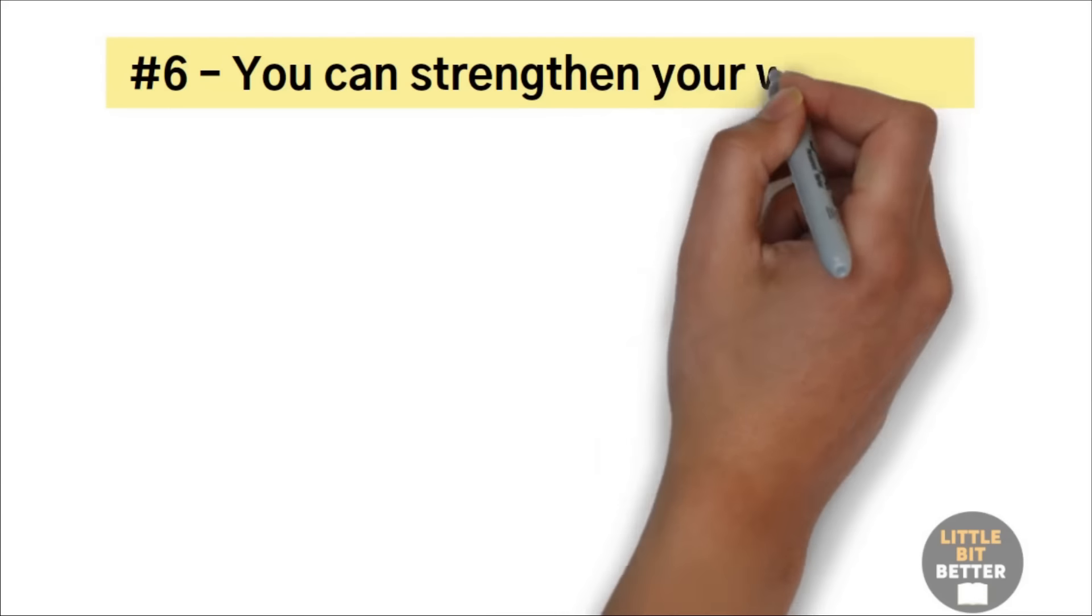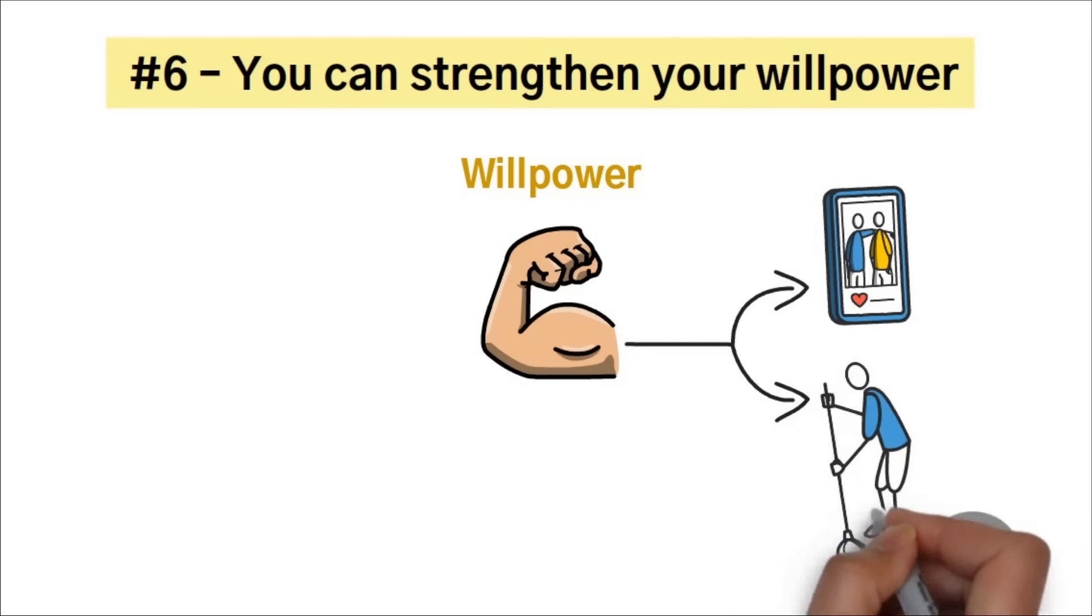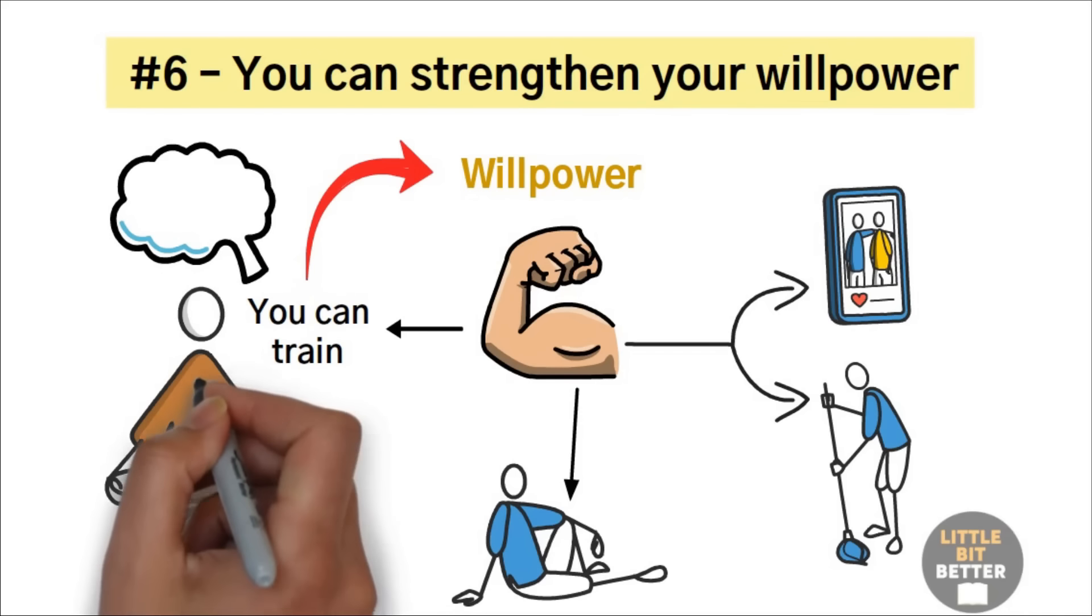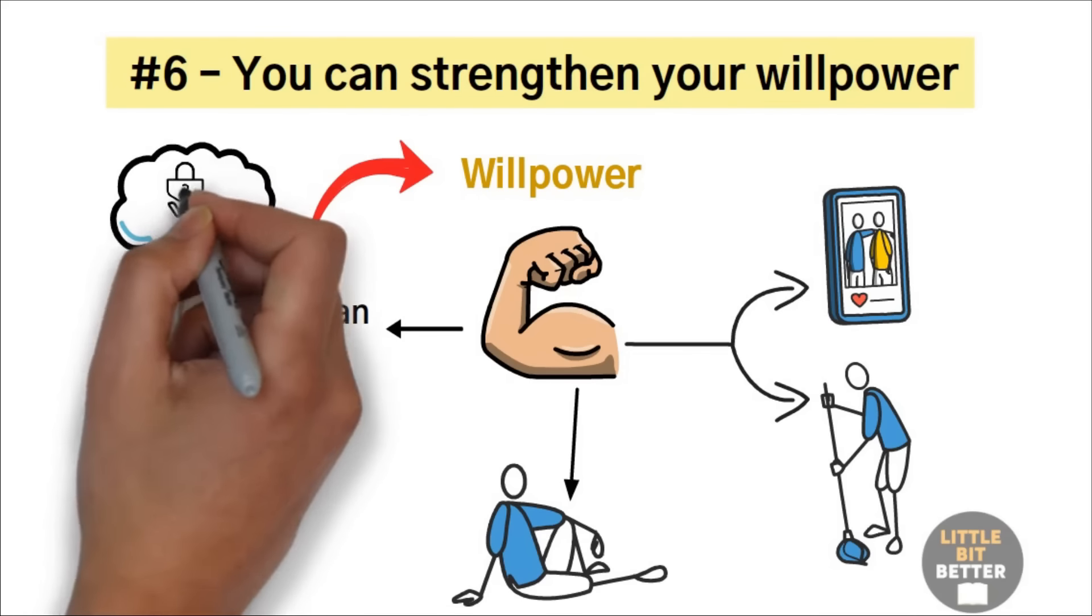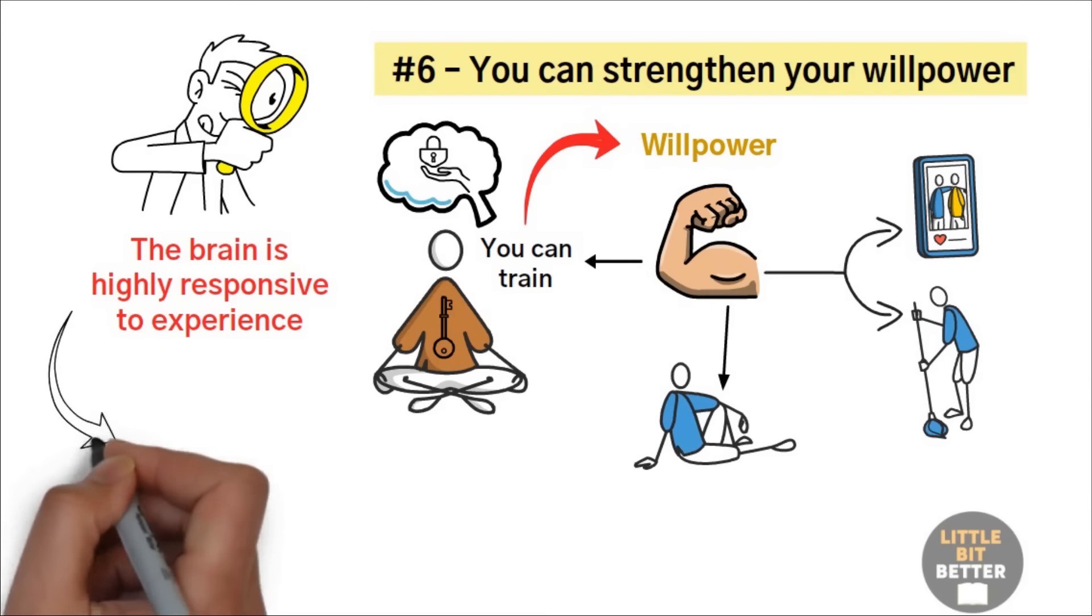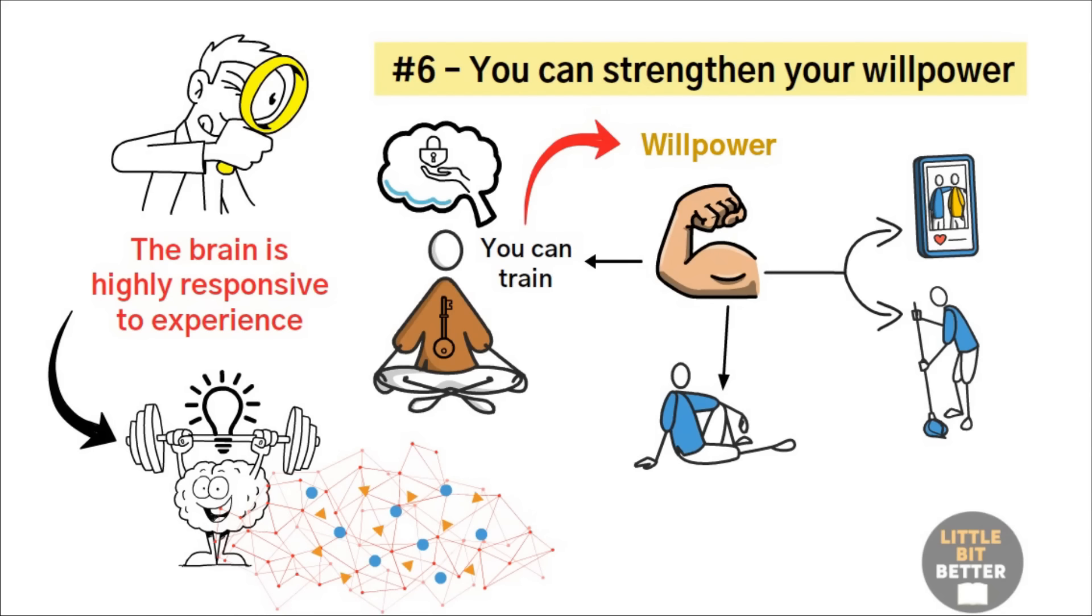Number six, you can strengthen your willpower. Willpower is like a muscle. It doesn't matter what you use it for, but if you use it too much, it gets tired, and then you have to rest a bit before you use it again. The good news is that, just like a muscle, you can train your willpower to make it stronger. Meditation is a great tool to train your mind in self-control because that's exactly what your mind tries to do during meditation. Neuroscientists have discovered that the brain is highly responsive to exercise. Ask your brain to do math every day, and it gets better at math. Ask your brain to concentrate, and it gets better at concentrating. Not only does your brain find these things easier, but it actually remodels itself and grows more mass and new connections.